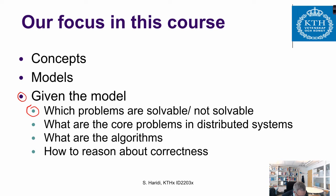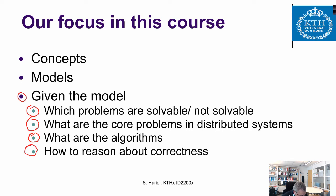Given a distributed system model, we will show which problems are solvable and which are not solvable. We will discuss the core problems in distributed systems and how they could be implemented in different models. Given a service abstraction or a problem, we examine the algorithms used to solve it — and the algorithm depends on which model we are using. To reason about correctness, we need to specify the service rigorously.